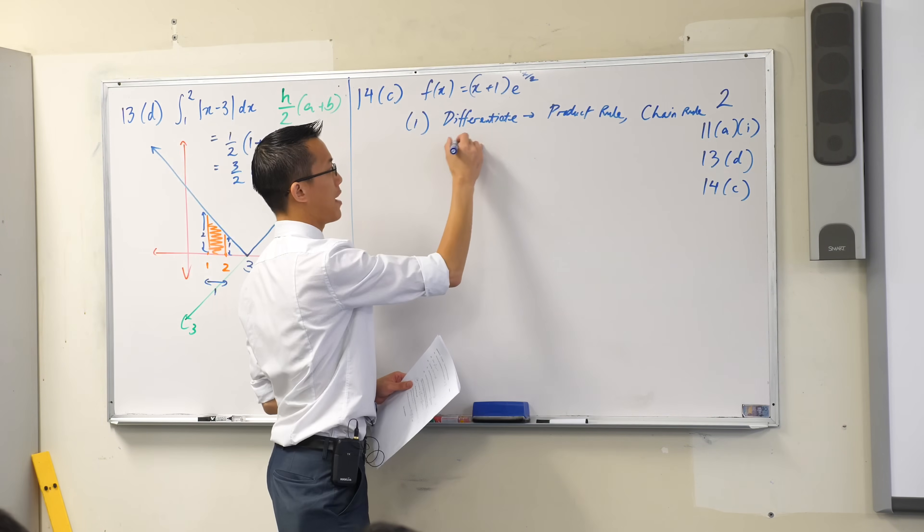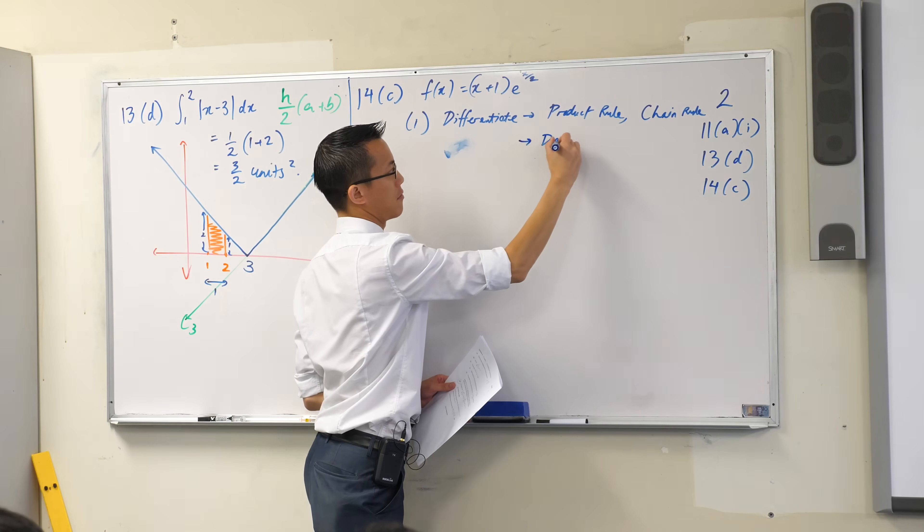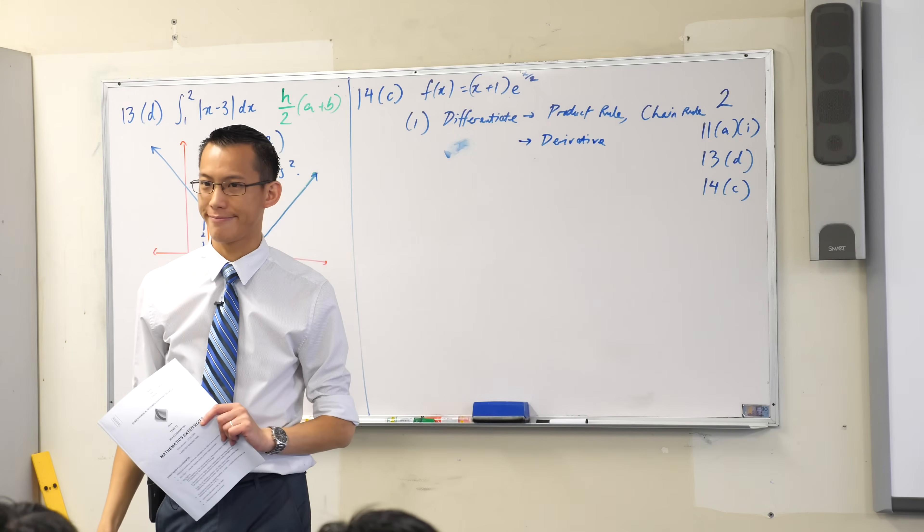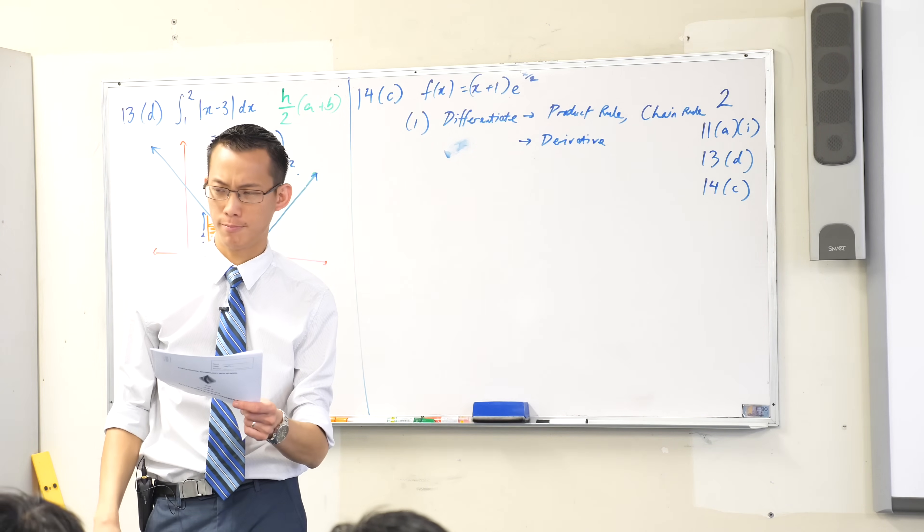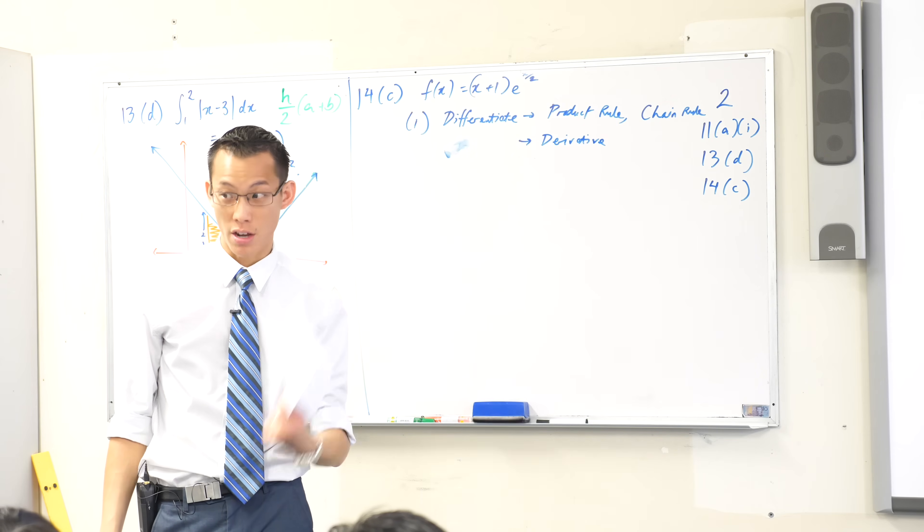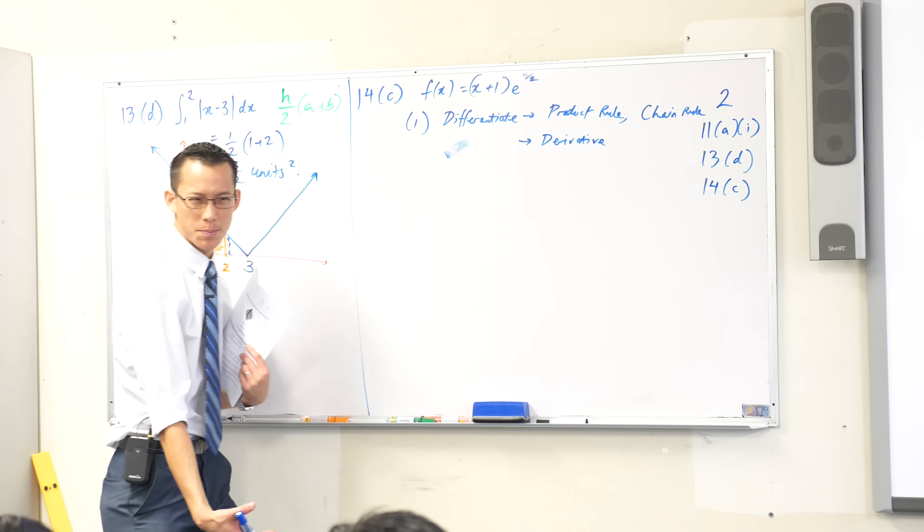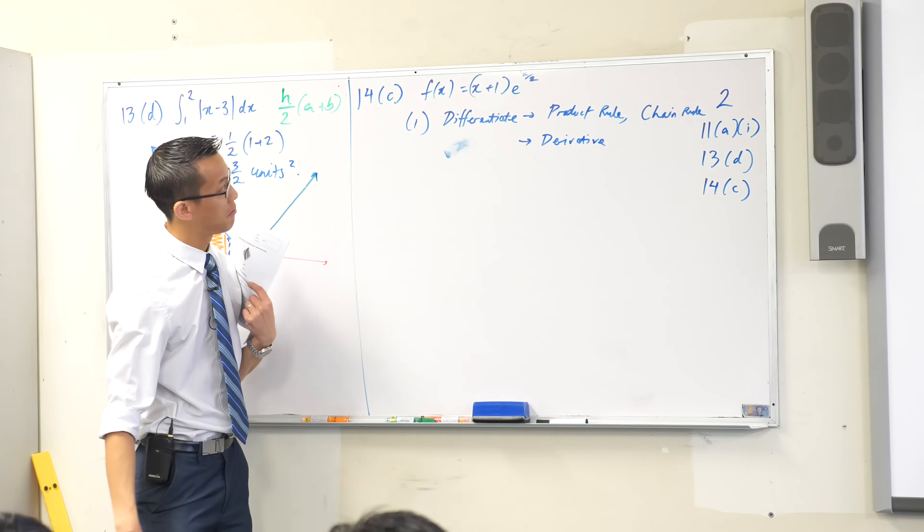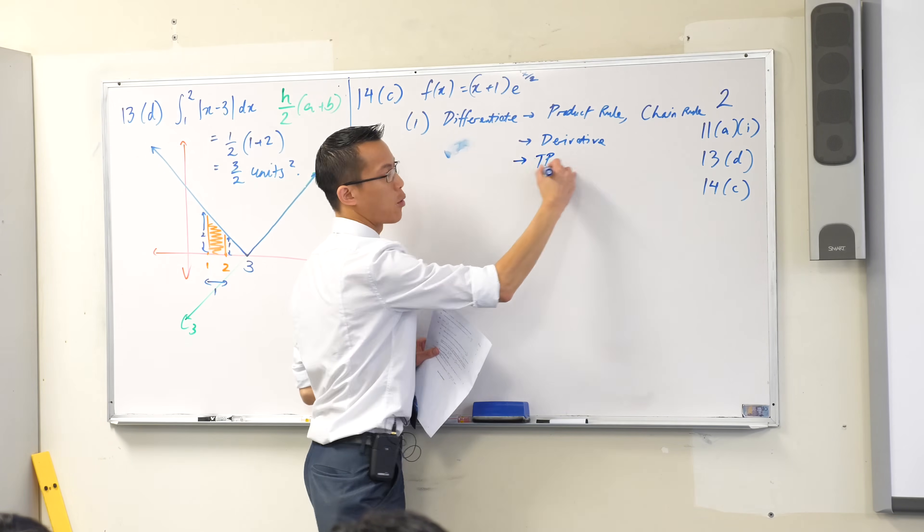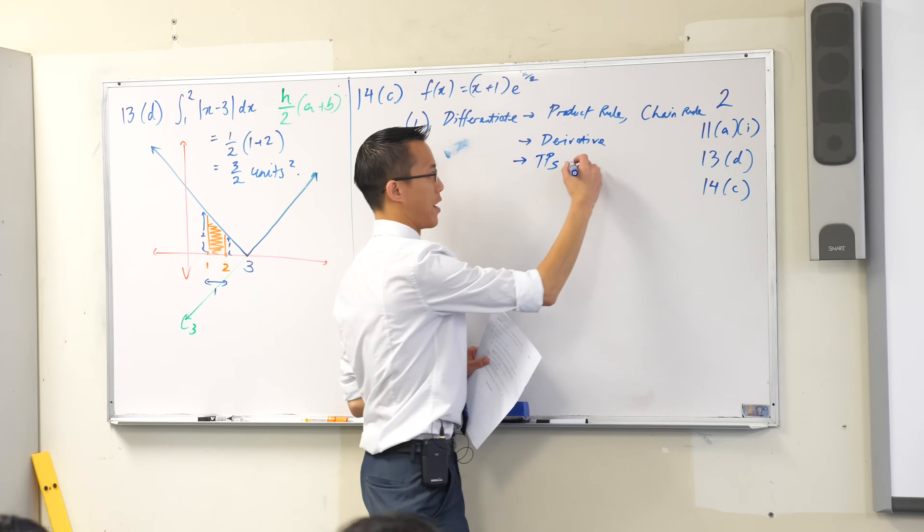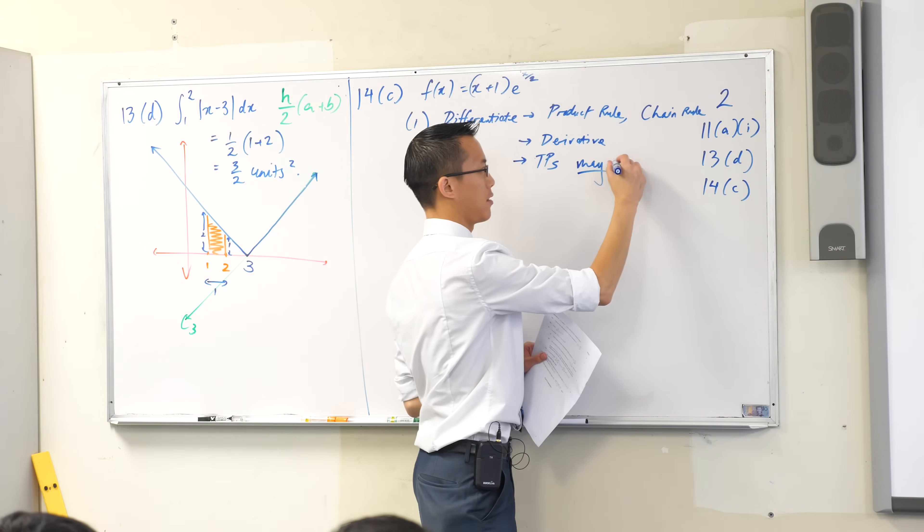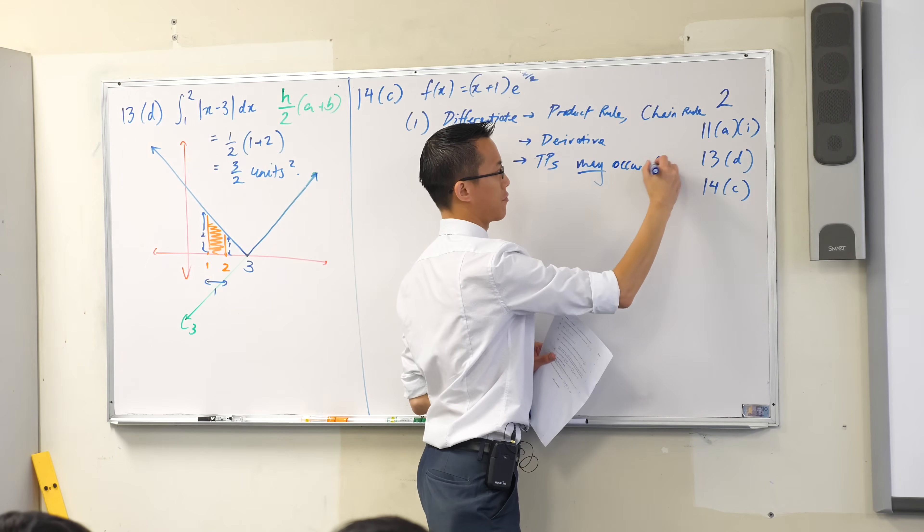You're going to get a derivative out of that. What do you do with that derivative? You're searching for a turning point, right? So where might turning points possibly occur? When the gradient is zero, right? So I'm going to say turning points, and I'm going to say may by the way, may occur when the derivative is zero.